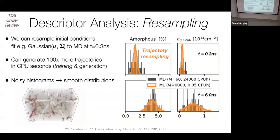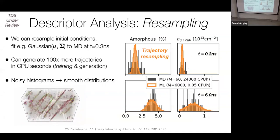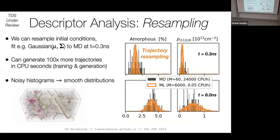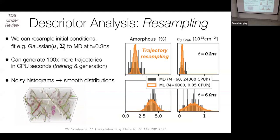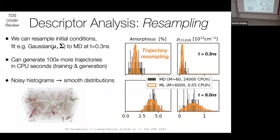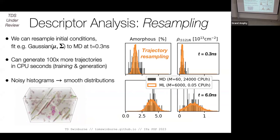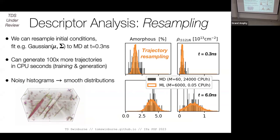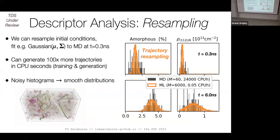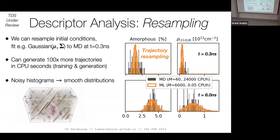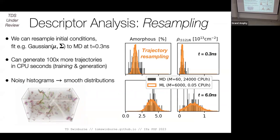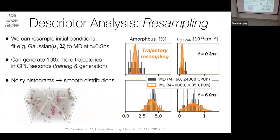Because I have these initial conditions at some initial time, I can fit them to a high-dimensional Gaussian, resample to produce a hundred times more initial conditions, and turn these sparse MD histograms into much smoother distributions in about a 120-dimensional space, which I can project onto various observables and propagate through time. So not just forecasting the future, but also resampling and running convergence tests on these systems.